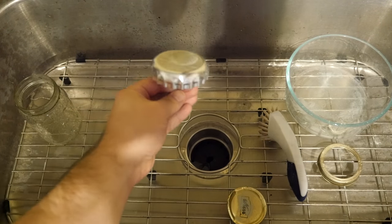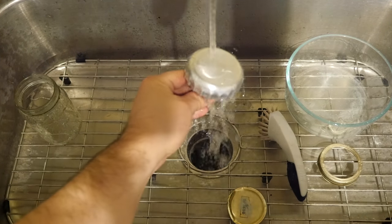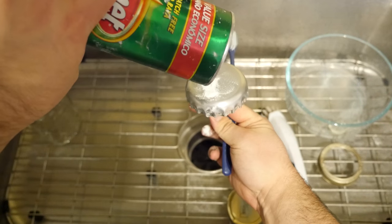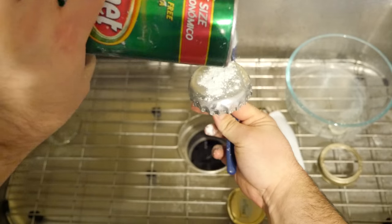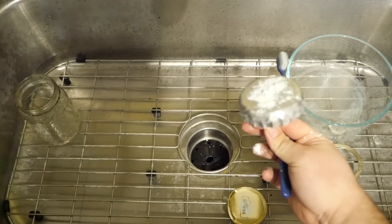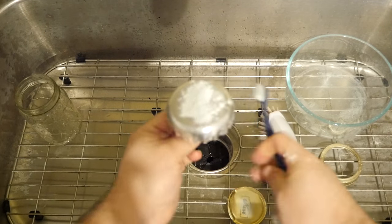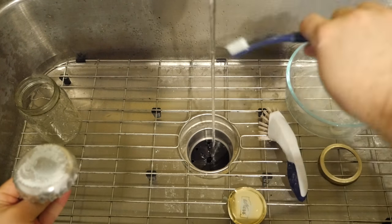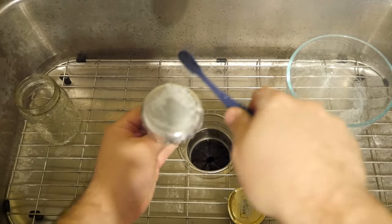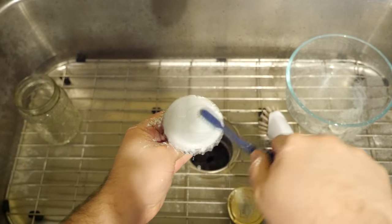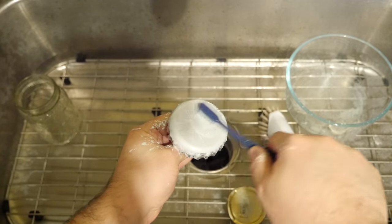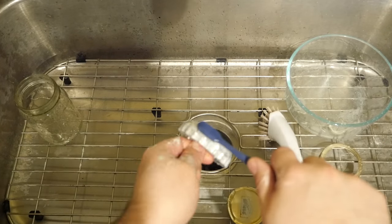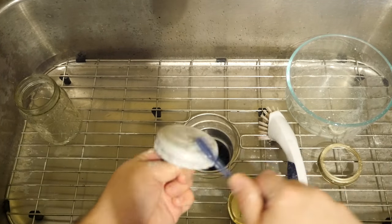For the powder coat to adhere you need to start with a clean part. I'm using Comet here to clean this. I got the idea to use Comet from a person named Dan Gelbart who has a really awesome series of videos on YouTube on prototyping. I'll link to the specific one on powder coating in the video description.